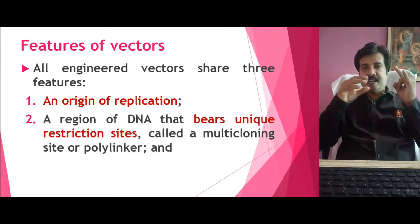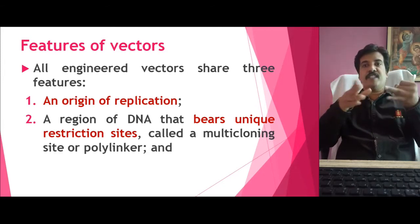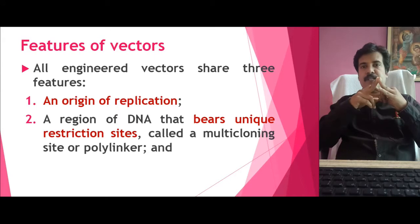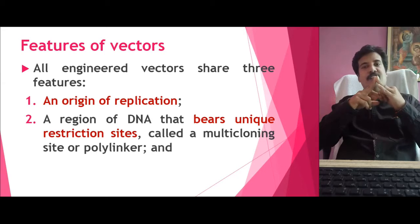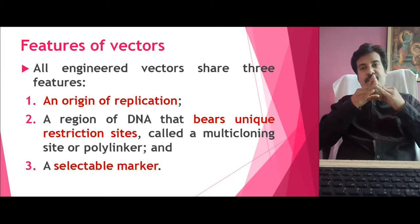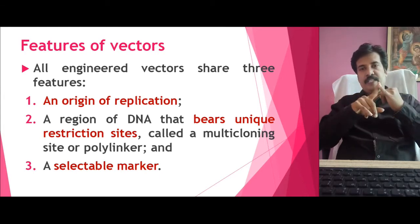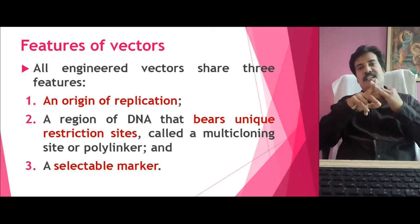Second, it carries a restriction site where we can cut the vector and we can insert the foreign DNA. Since we can clone different types of foreign DNA with different restriction sites, it is also called as multiple cloning sites. If it is not available, we can engineer and add polylinkers to it. And the third one is a marker, so that we can identify the cloned one from the wild strain. These are the three basic characteristics a vector should carry: a replication site, a restriction site, and a marker.